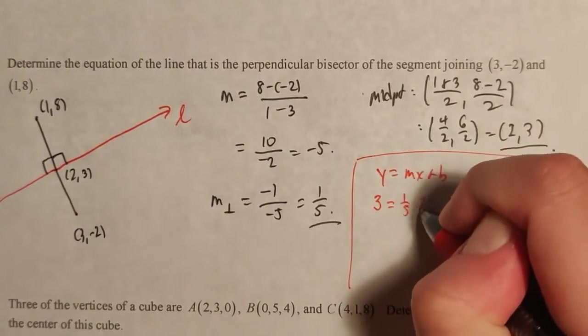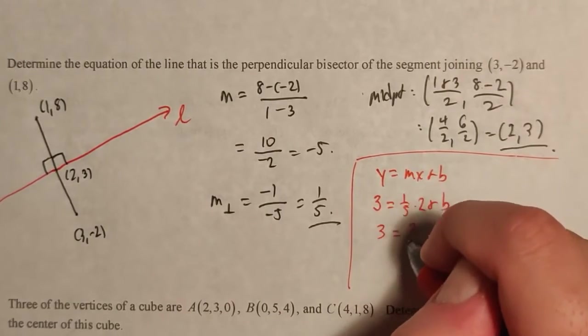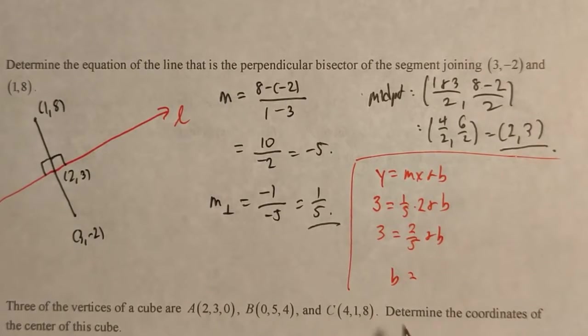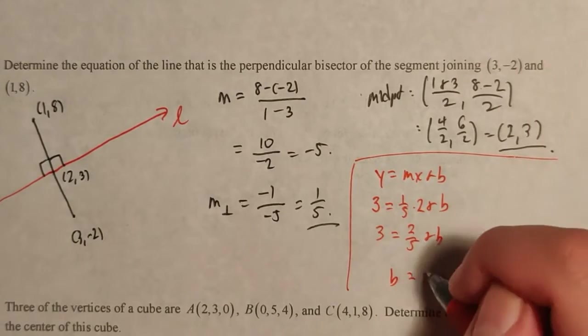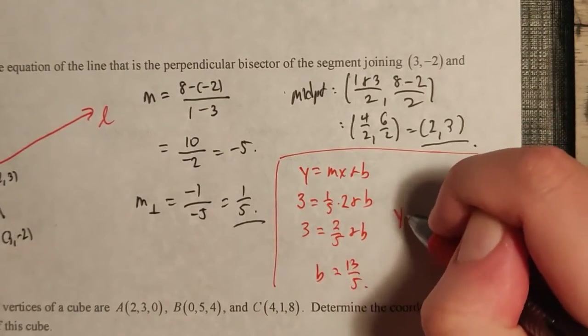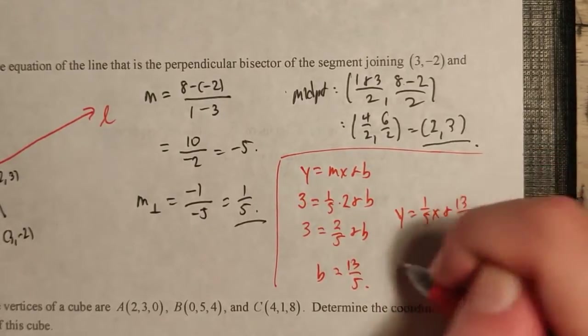So we can start substituting in. 3 is 1 fifth times 2 plus b. So there's 3 equals 2 fifths plus b. We subtract 2 fifths from both sides. 3 is 15 over 5. So that means we get 13 over 5. As a result, the equation of our line is therefore y equals 1 fifth x plus 13 over 5.